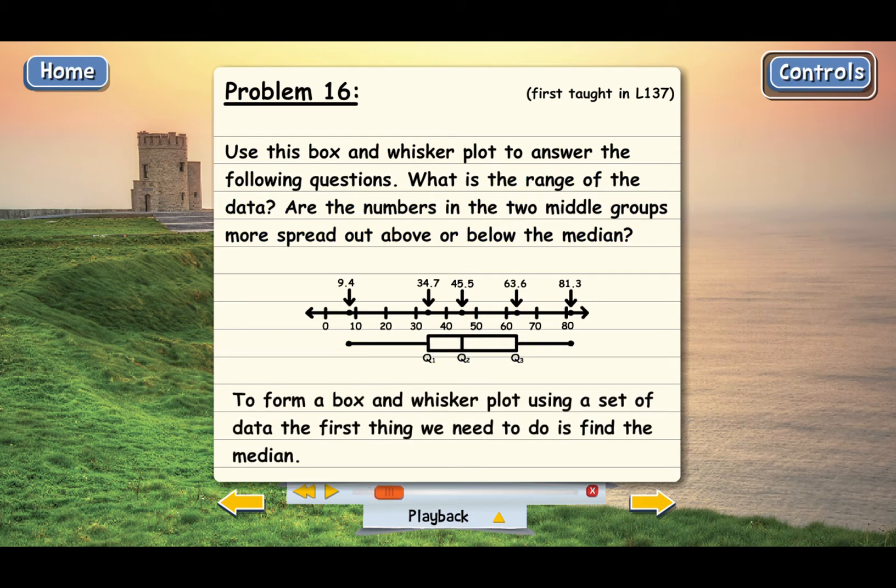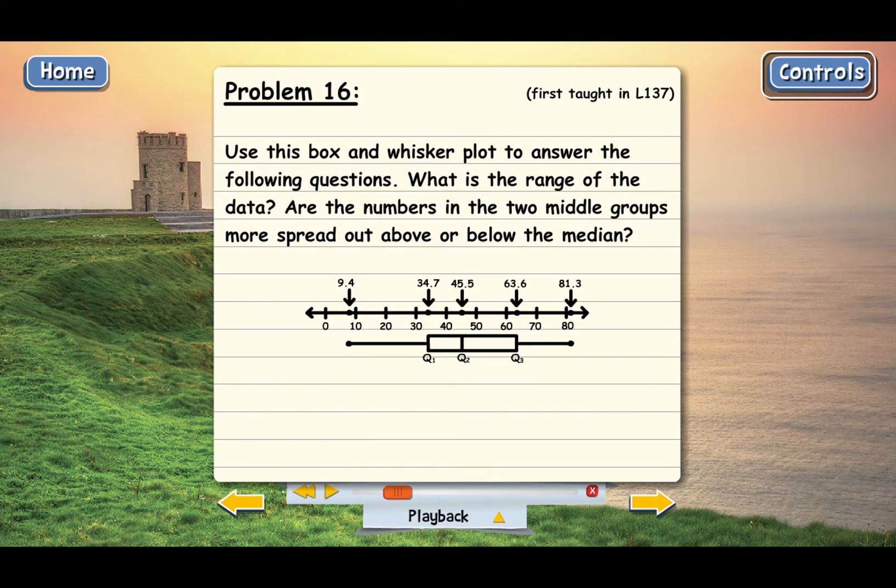Remember to form a box and whisker plot, the first thing we do is find the median of the set of data. The median is the number that falls directly in the middle when we arrange the terms from smallest to largest.